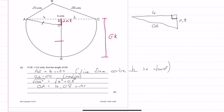Now we know OK equals 4.08 units, and OE equals 0.8 units, so we can work out EK easily. EK = OE + OK = 0.8 + 4.08 = 4.88 units. We get four marks for that.